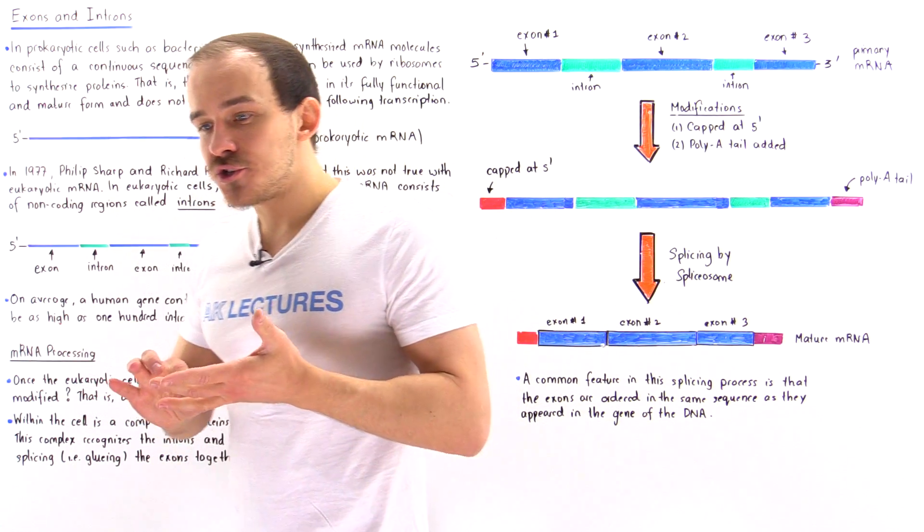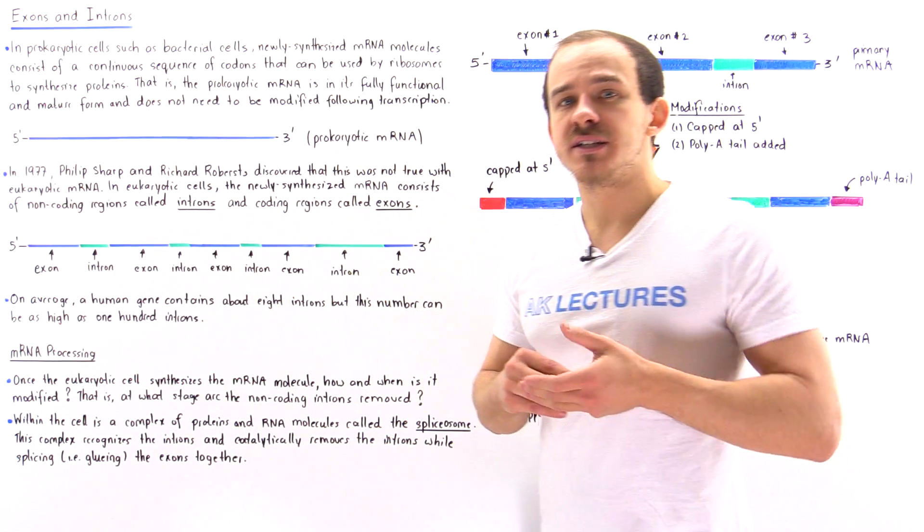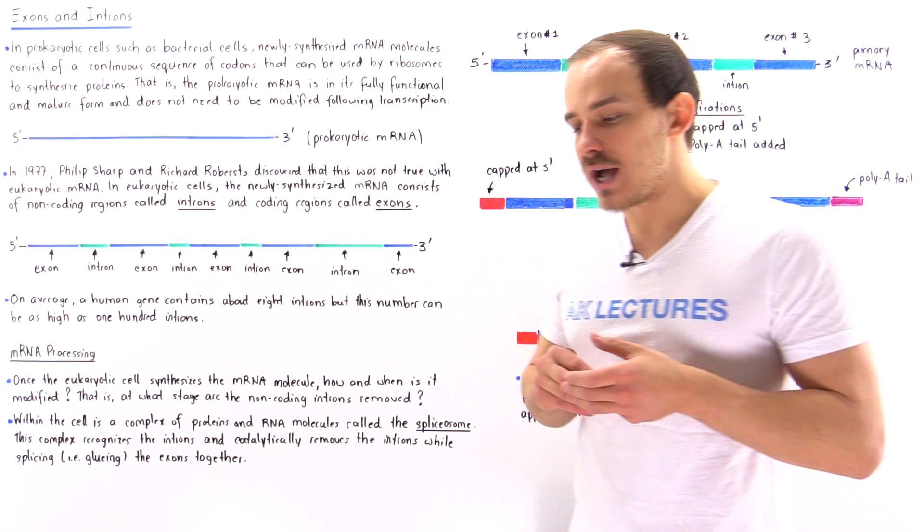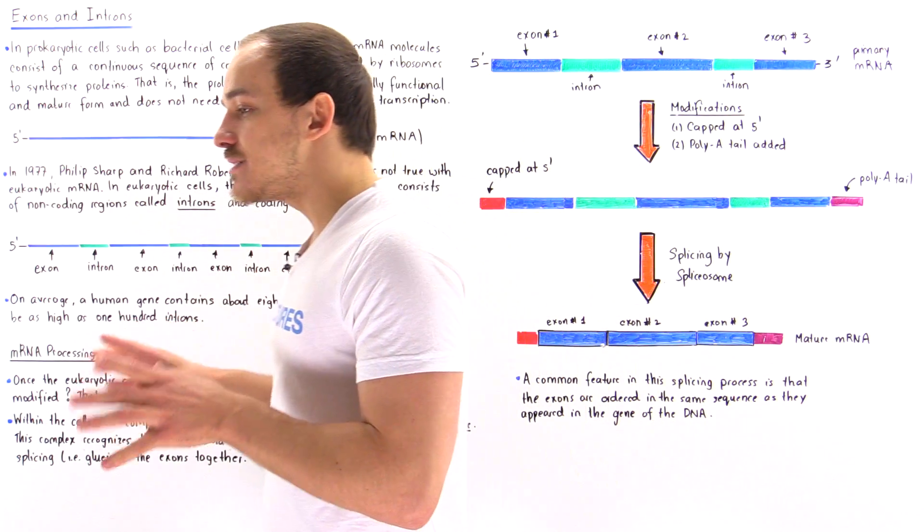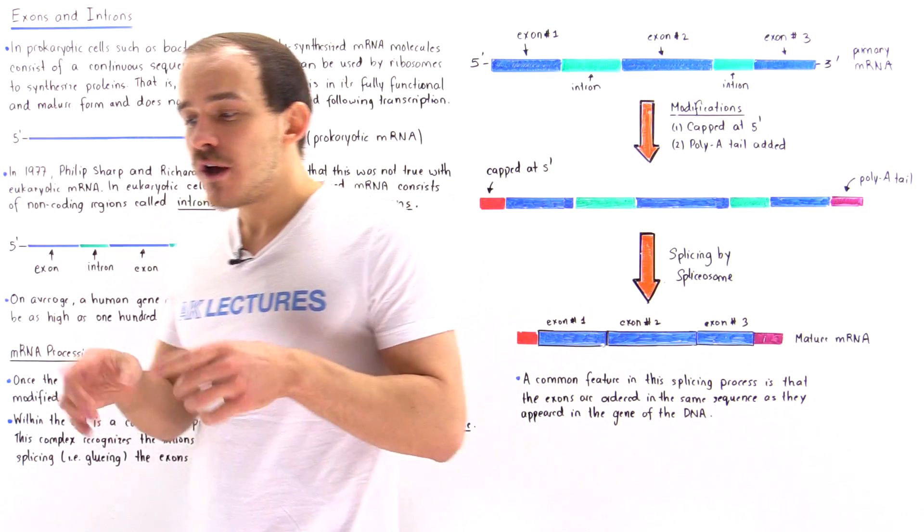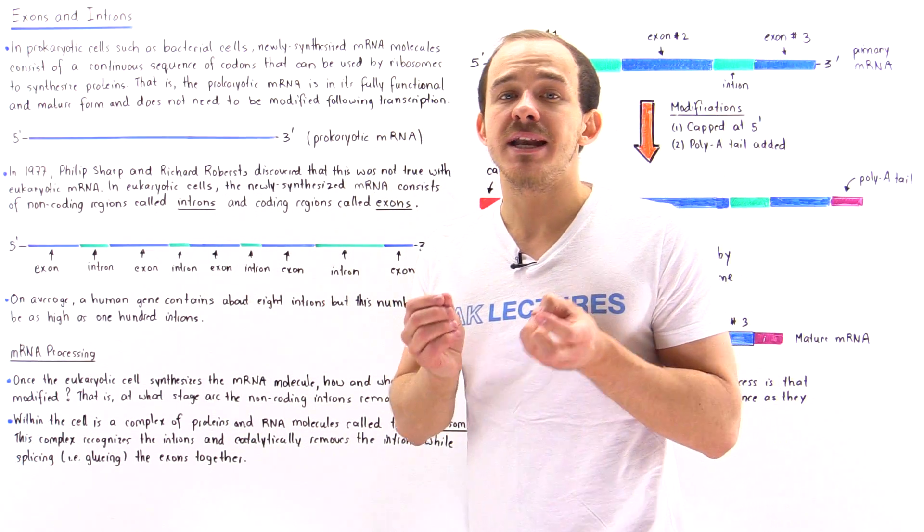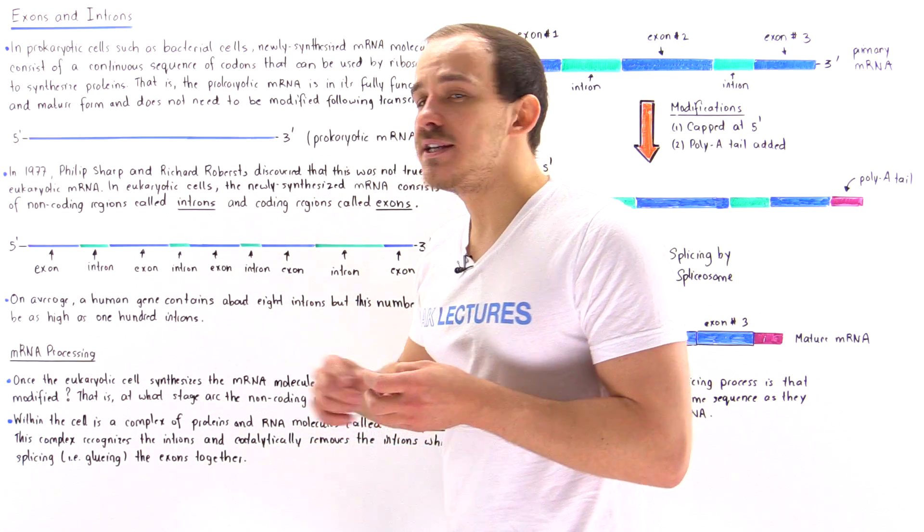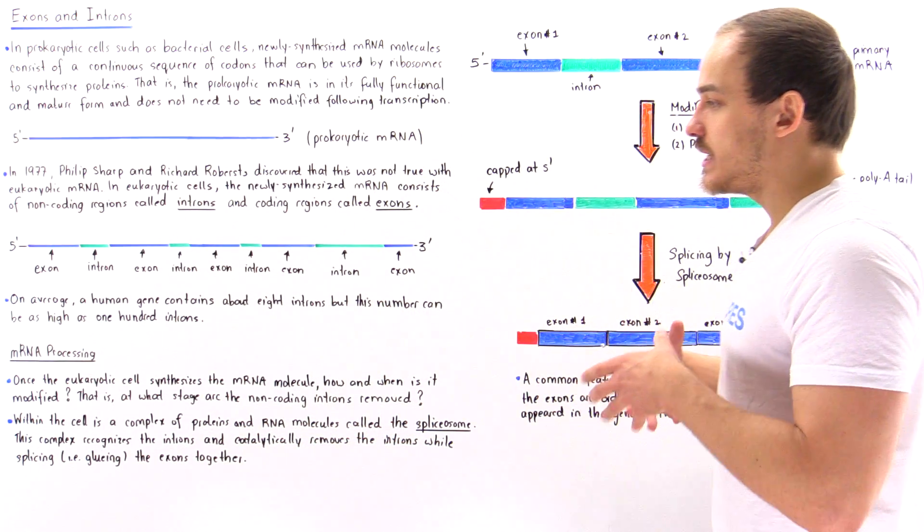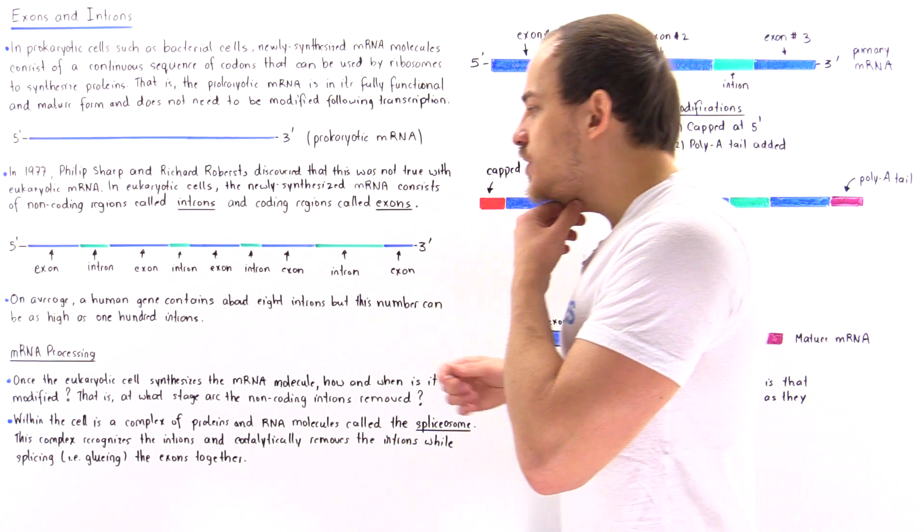Now, on average, in humans, a human gene contains about eight introns. But for those genes that are very, very large, for example, tens of thousands of nucleotides long, we can have as many as hundreds of these introns in a given gene. Now, the question is,